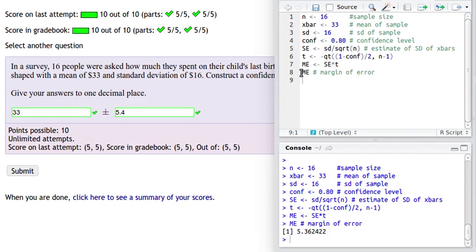So the margin of error is going to be the SE, the estimate of the standard deviation, times that T. Once we highlight that value and run that calculation, we find that it's 5.36 something or another, and we're supposed to round this to one decimal point, so that's 5.4.